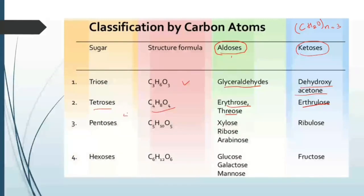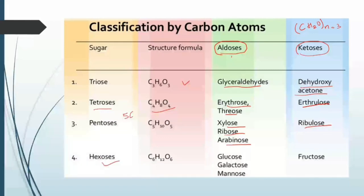Pentoses have five carbons with formula C₅H₁₀O₅. In the aldose group: xylose, ribose, and arabinose; in the ketose group: ribulose. Hexoses have formula C₆H₁₂O₆. In the aldose group: glucose, galactose, and mannose; in the ketose group: fructose.